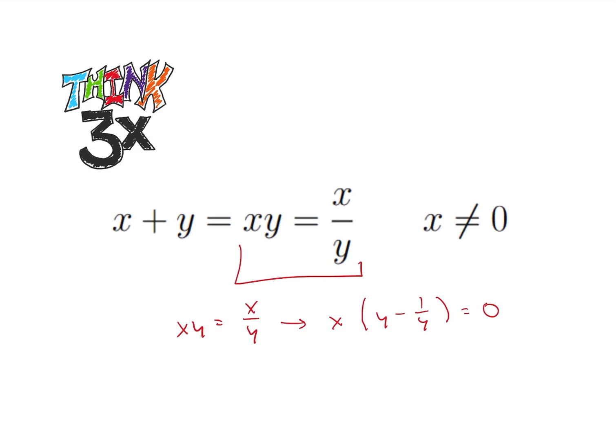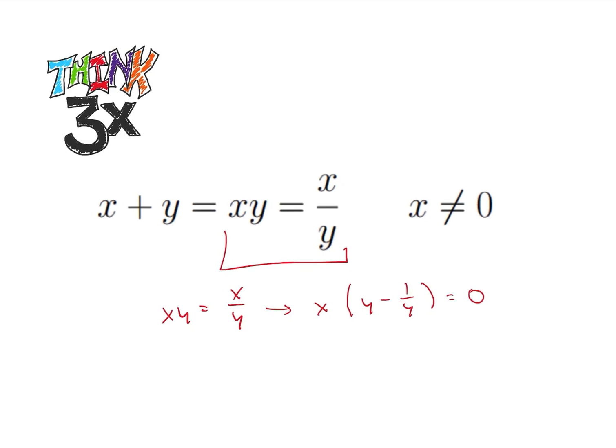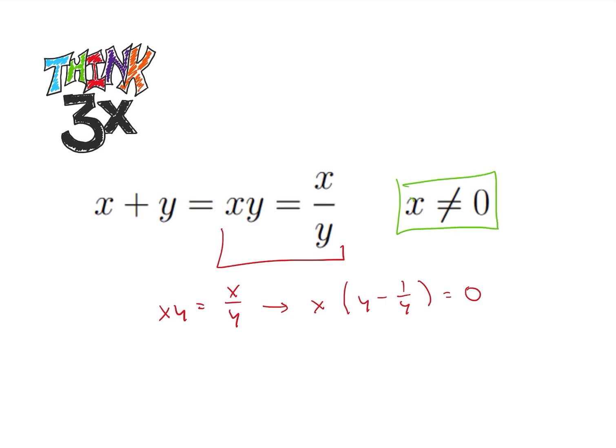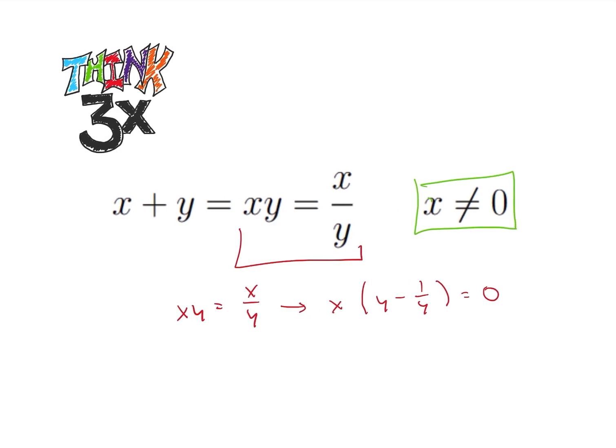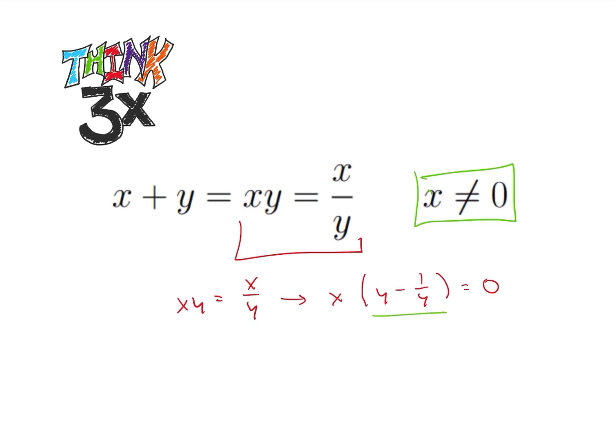What I know is that x does not equal 0. So in order for this statement to be true, that means that y minus 1 over y must be equal to 0. So I know that y is equal to 1 over y or that y squared is equal to 1. So right now I know that y has to be equal to positive or negative 1.